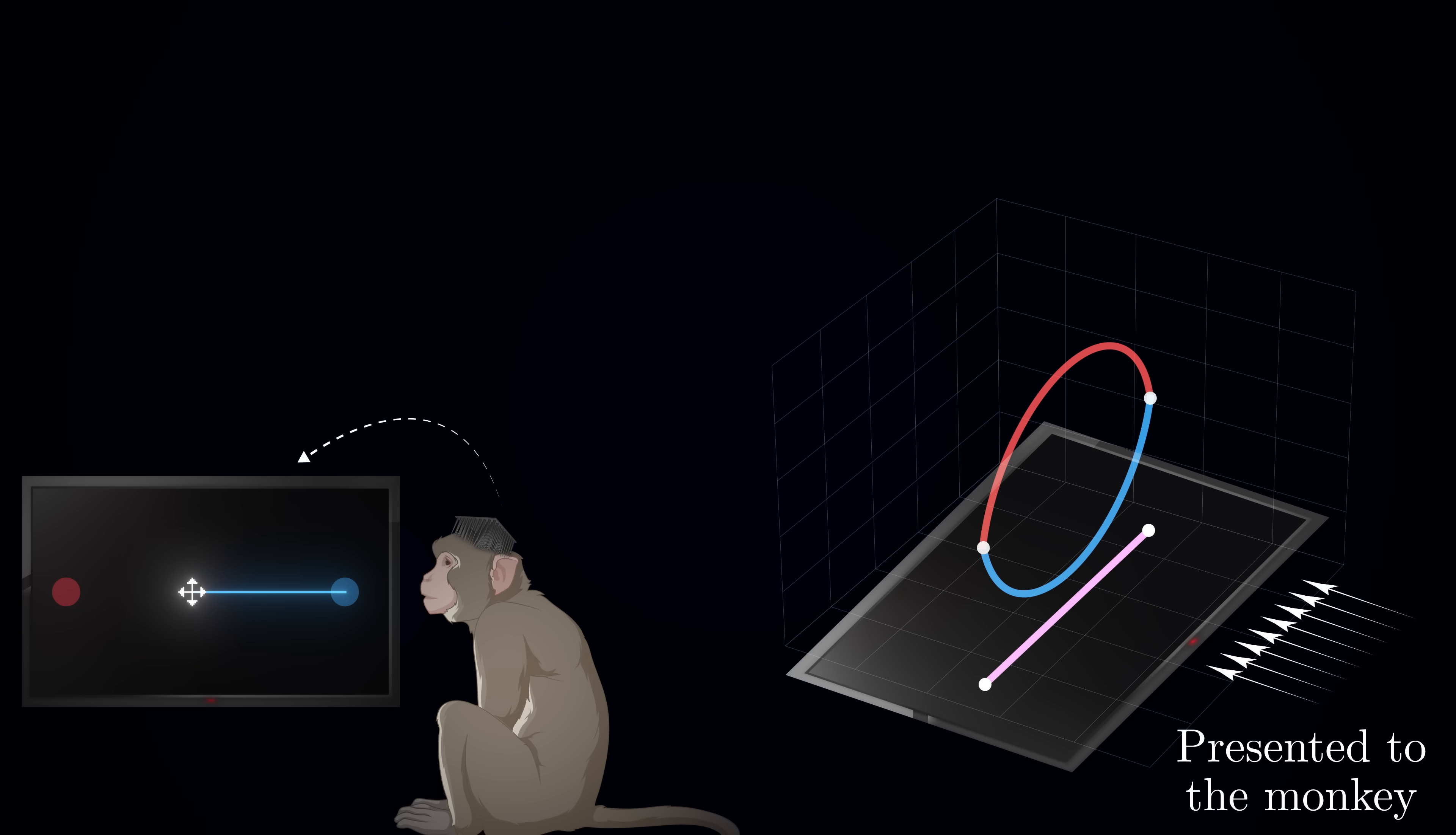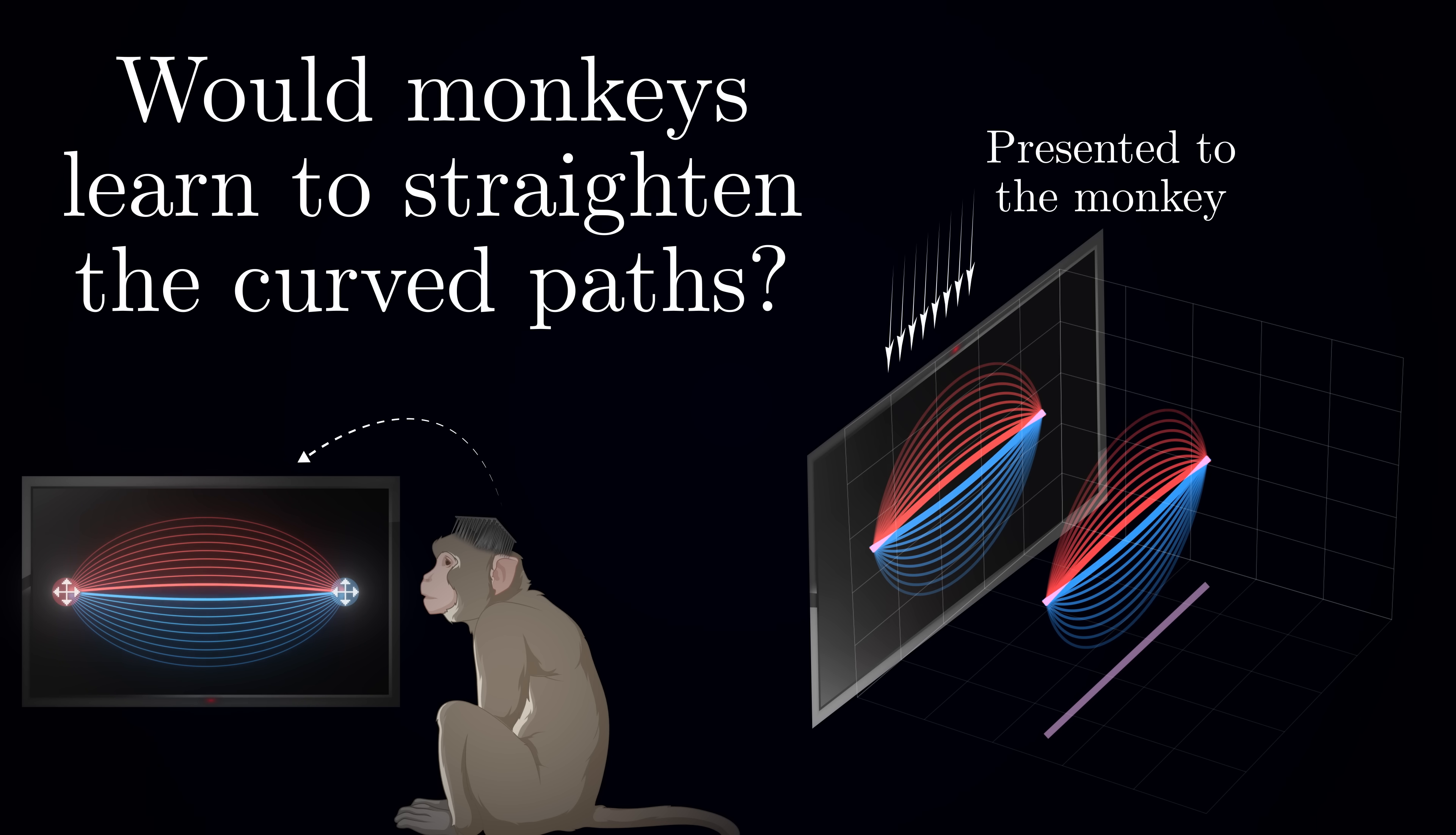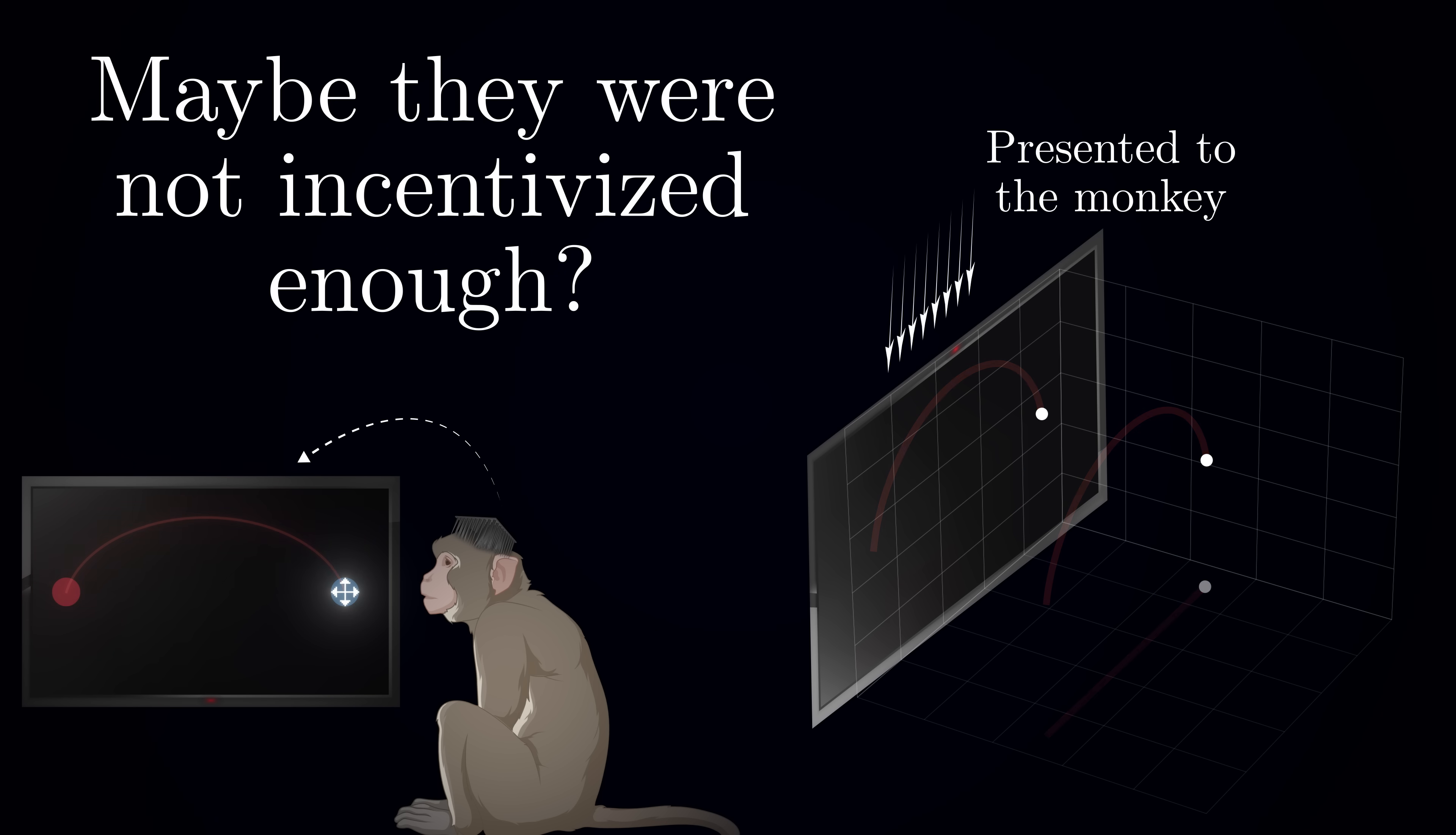Now, what would happen if monkeys could see this new separation-maximizing view instead? When the group switched the interface to use this mapping, the animals initially began to see their cursor moving in curved paths rather than straight lines. You might expect them to use this visual feedback to modify what commands they send to the interface in order to straighten out the paths. After all, when reaching for an object, we naturally move in straight lines and automatically correct any deviations. Surprisingly though, the monkeys kept moving the cursor in curved paths, showing no signs of trying to straighten them. This suggests that these neural trajectories might be outside their conscious control, constrained by the underlying brain circuitry. But an alternative explanation might be that perhaps the monkeys simply were not motivated enough to change their activity. After all, they were still getting rewards, despite taking longer, curved paths.